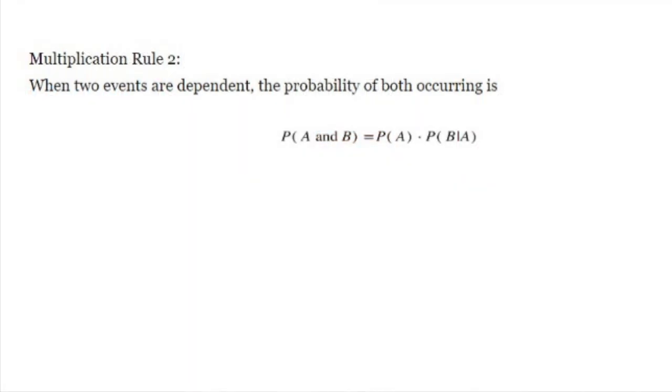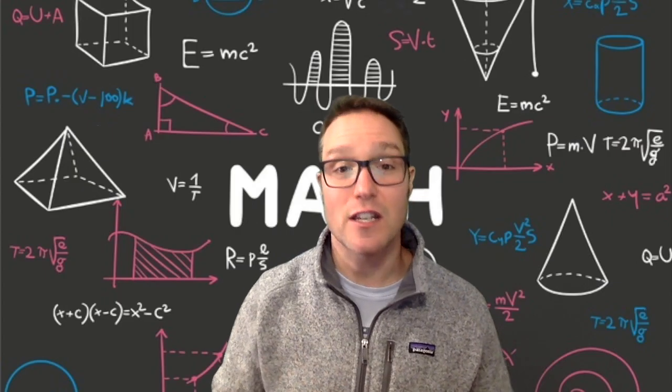So when two events are dependent, the probability of both occurring is the probability of A and B equals the probability of A times the probability of B given that A occurred. Again, these two rules are actually the same if you notice that the probability of B given A is the same as the probability of B when A and B are independent because adding that condition that A just occurred would not affect the probability that B occurs if they're independent.